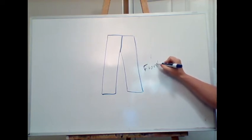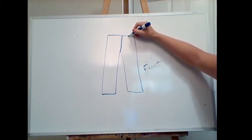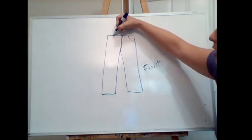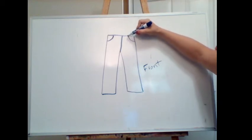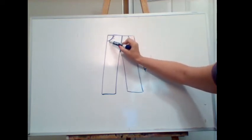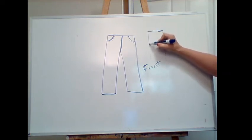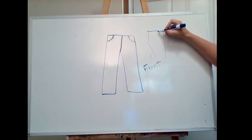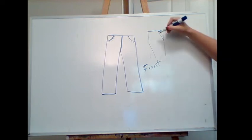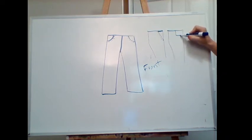Assuming this is the front of the pants, what else typically goes on a standard pair of jeans? We have pockets. Jean pockets will typically come from the waist to about the high hip and curve like this, with top stitching to finish those edges. There are lots of different types of pocket shapes for pants.